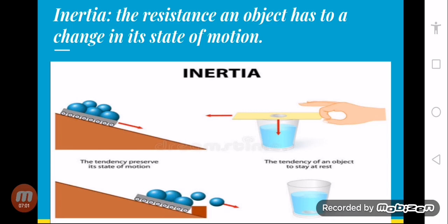Here we have two examples. The tendency of an object to preserve its state of motion. If there are balls in a trolley moving along an inclined plane, and we suddenly stop the trolley, the balls — because they are in motion due to inertia — will continue to move. Because the trolley is stopped but the balls are still moving, they will roll out of the trolley. This is the property we call inertia: they continue to keep their state of motion.